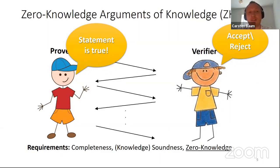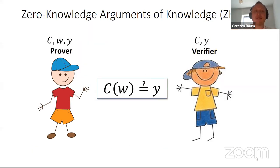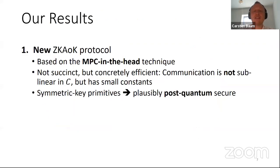Zero knowledge means a verifier could simulate an accepting transcript without access to an actual witness. In our case, the statement is encoded by a circuit over a field; the prover has a witness w and wants to convince the verifier that C applied to w equals y. This is an argument of knowledge because the prover is computationally bounded.